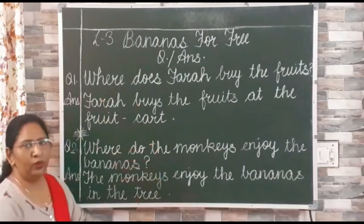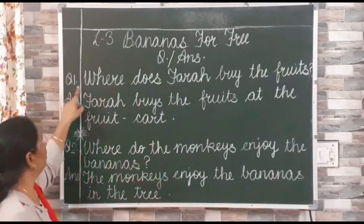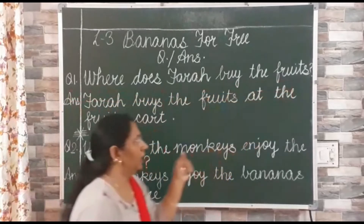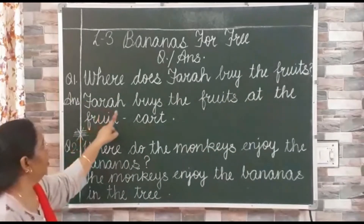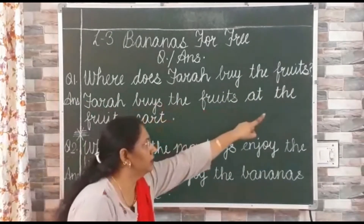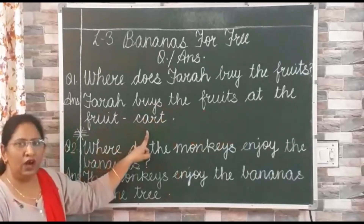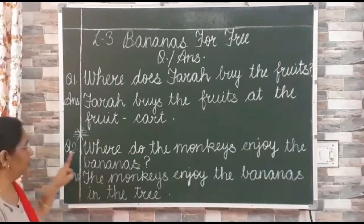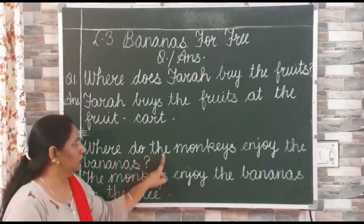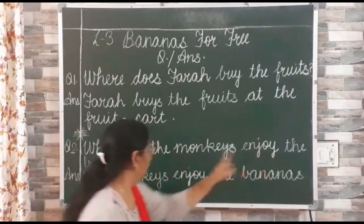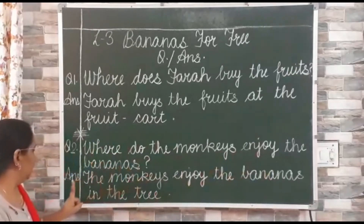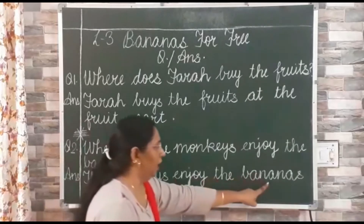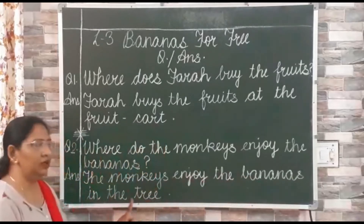Now let us revise the question answers. Question number 1: Where does Farah buy the fruits? And the answer is: Farah buys the fruits at the fruit cart. Question number 2: Where do the monkeys enjoy the bananas? And the answer is: The monkeys enjoy the bananas in the tree.